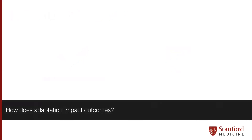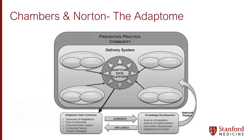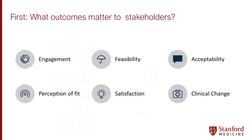The goal is to figure out how adaptation impacts outcomes. Chambers and Norton have really talked about this: if we build a database with information about different types of interventions, different types of adaptations made, and the core components of those interventions, we can start to collect information about what type of impact each has on outcomes of interest. We need to check with our stakeholders to make sure we're assessing outcomes that matter to them. For example, an adaptation that increases engagement and improves clinical change may be more important than one that only affects clinical change.